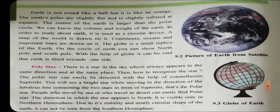The earth's poles are slightly flat and the equator is slightly inflated. Inflated means they have a little bulge here — our earth is a little bulged out here. The equator is slightly inflated, meaning the surface at the center is very big as compared to the polar circle.